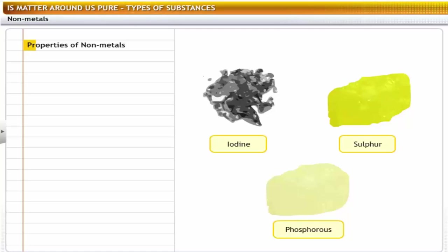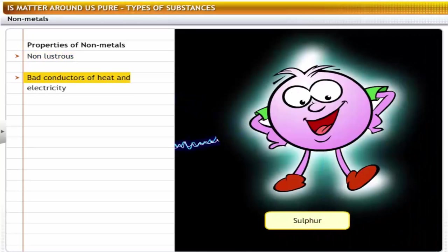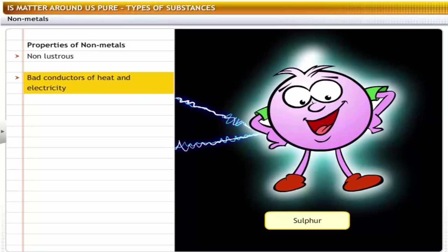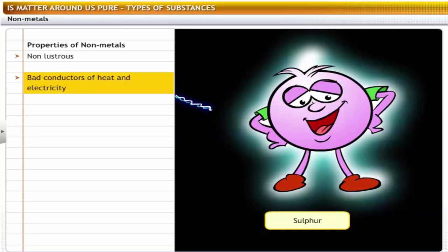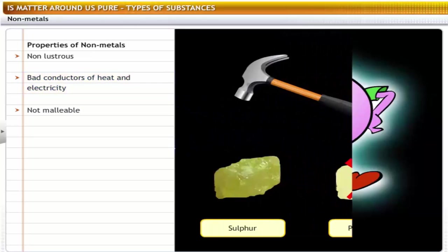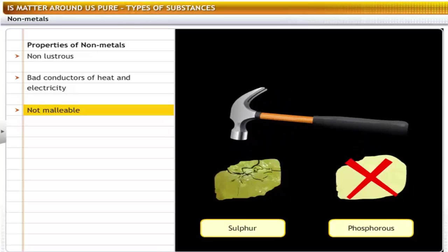Let's look at some of the properties of non-metals. Non-metals usually show some or all of the following properties: they do not exhibit luster, they are bad conductors of heat and electricity — they do not contain free electrons in them, so they do not conduct heat and electricity, for example, sulfur. They are not malleable and cannot be drawn into sheets, for example, sulfur and phosphorus.